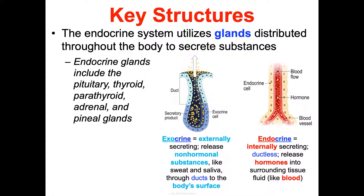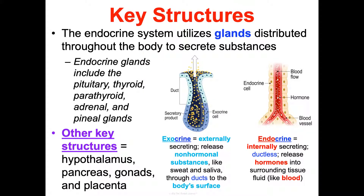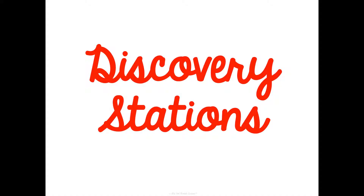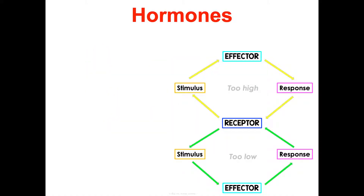Endocrine glands include the pituitary, thyroid, parathyroid, adrenal, and pineal glands. Other structures that also secrete hormones include the hypothalamus, pancreas, gonads (testes in males, ovaries in females), and the placenta. There are also endocrine cells scattered throughout your entire body, but these are the major glands and structures we'll be covering in the discovery stations and body diagram labeling.